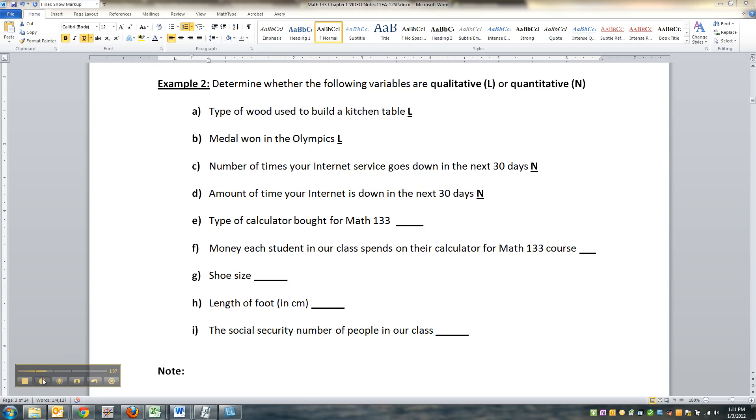The type of calculator you bought for Math 133, or if you're an online student, the computer program you bought like Excel or StatCrunch - that is definitely qualitative. Even though calculators have numbers like 83 and 84, or Excel 2010 versus Excel 2003, the numbers there don't really mean anything.